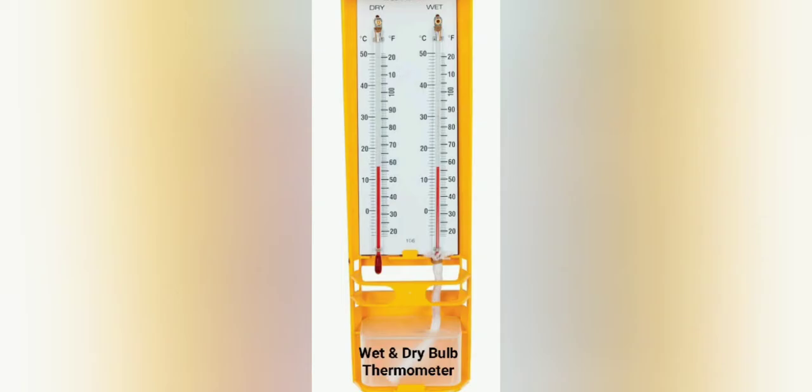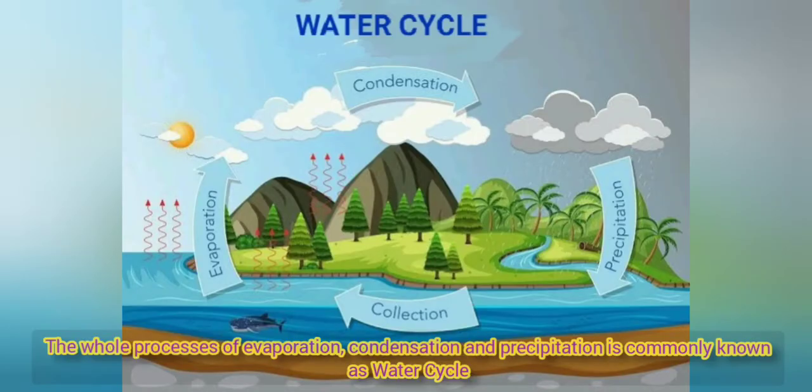This is the image of the wet and dry bulb thermometer, which is the instrument used to measure humidity.